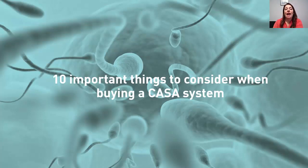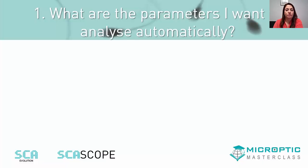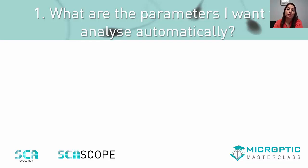Let's start with 10 aspects to consider when choosing a CASA system for your laboratory. First question: what parameters do I want to analyze? First of all, we must consider which species we would like to work with — human or animal, such as pig, rabbit, fish or rats — since it is not the same to analyze human sperm as rat sperm or any other animal.